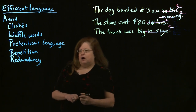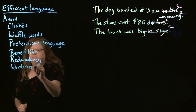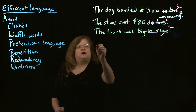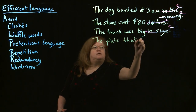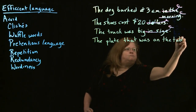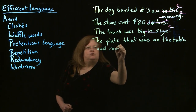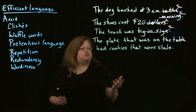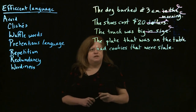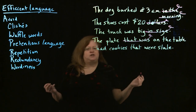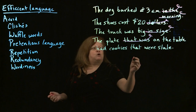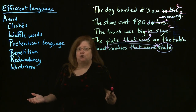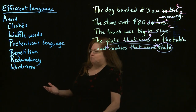We also sometimes get wordiness where we have extra words we don't really need. Something like 'the plate that was on the table had cookies that were stale.' We don't need 'that was' — we can just say 'the plate on the table.' And we can get rid of 'that were' and move 'stale' forward: 'The plate on the table had stale cookies.' Now we've got something more efficient and more effective.